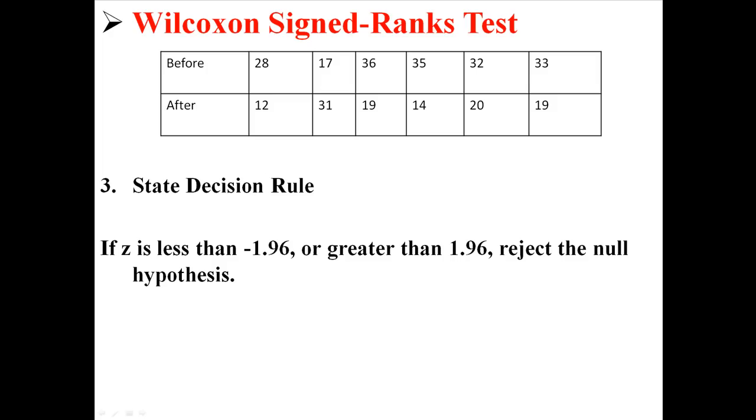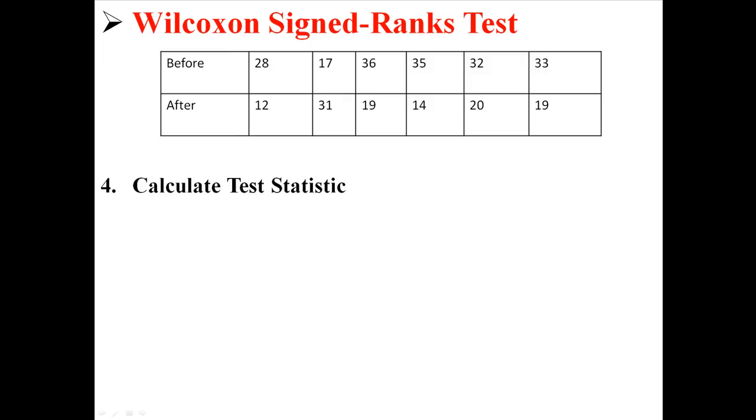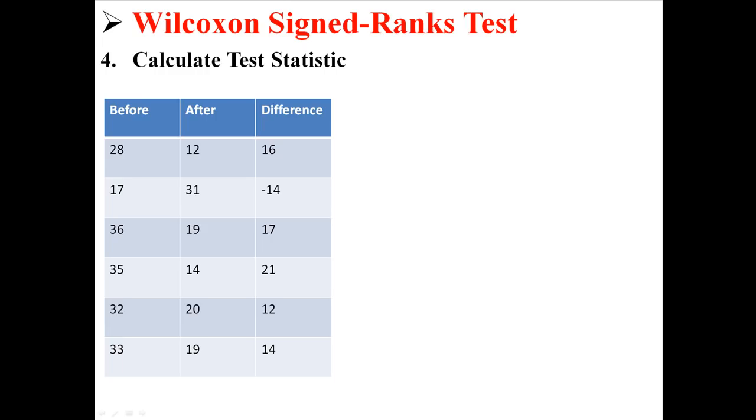So here we go. Here is our data just organized in different ways so we can work with it. Now we're going to calculate difference scores. This is just like a dependent samples t test. We have difference scores. So now we're going to throw away the original data. We just care about these difference scores.